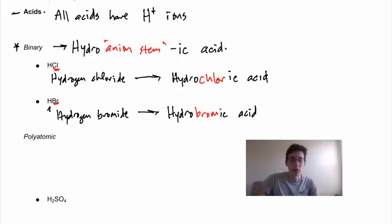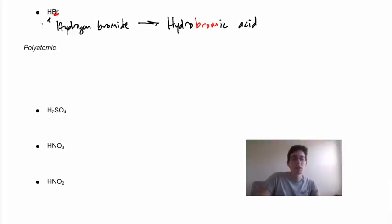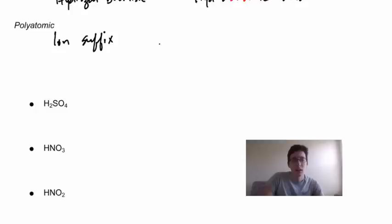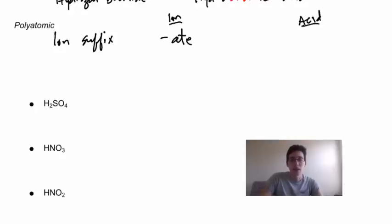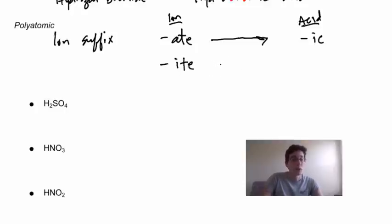We'll start using these more in class — if I say hydrofluoric acid, you should be able to write the chemical formula. Polyatomic ions follow slightly different rules based on their endings. If the polyatomic ion ends in -ate (like nitrate, sulfate, or chlorate), the acid suffix becomes -ic. On the other hand, -ite endings (like nitrite, sulfite, or hypochlorite) become an -ous suffix.